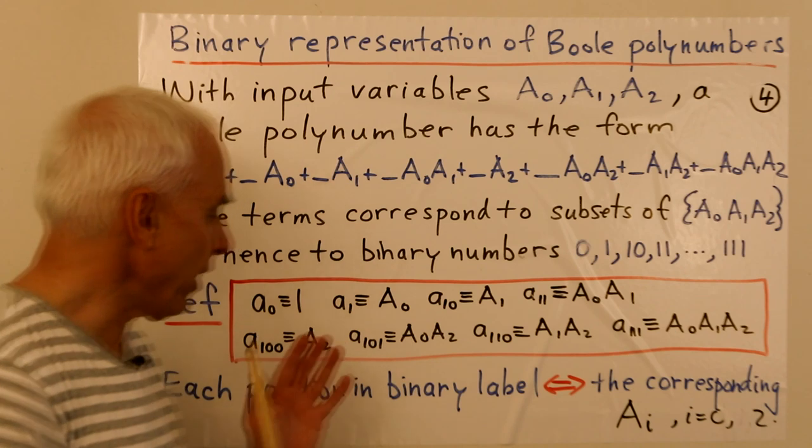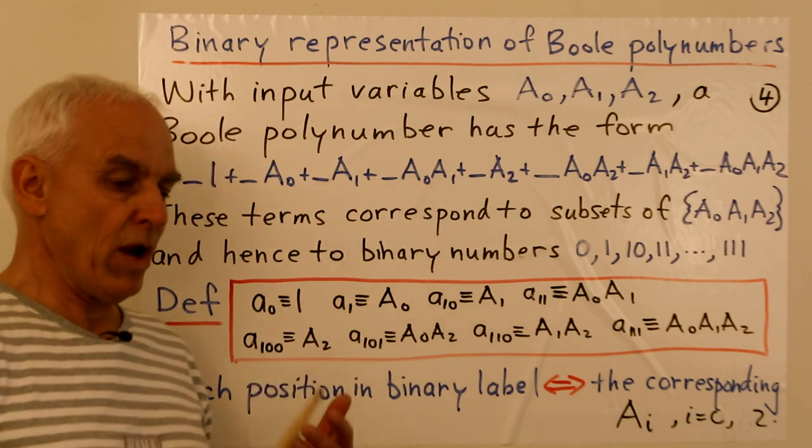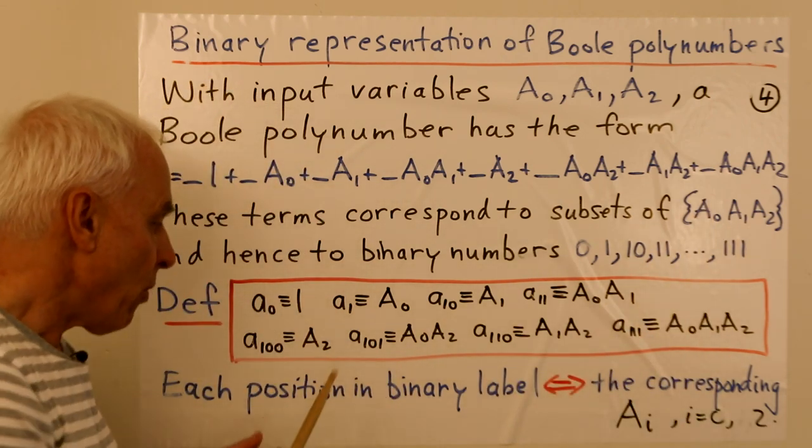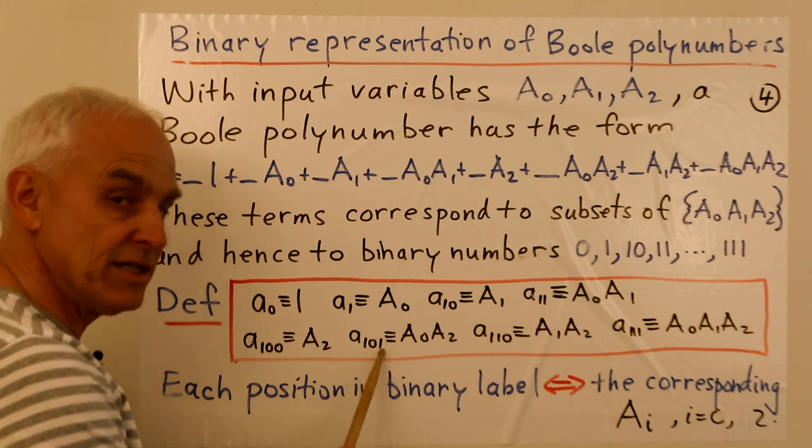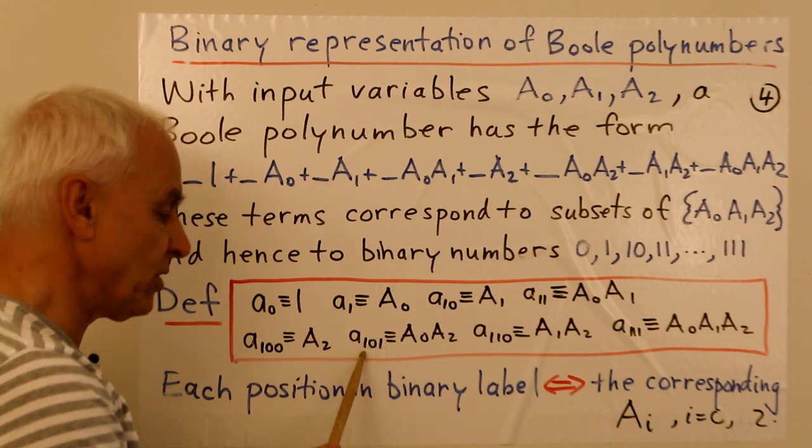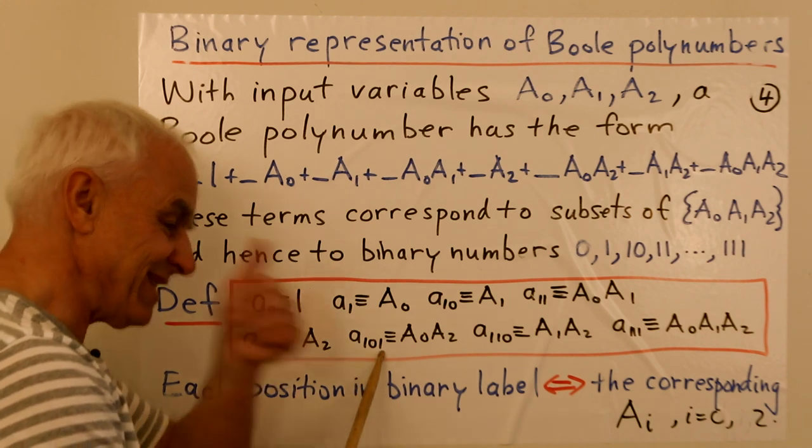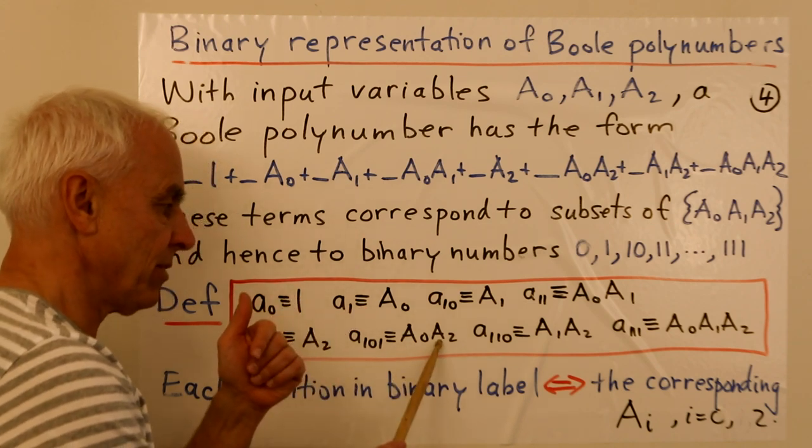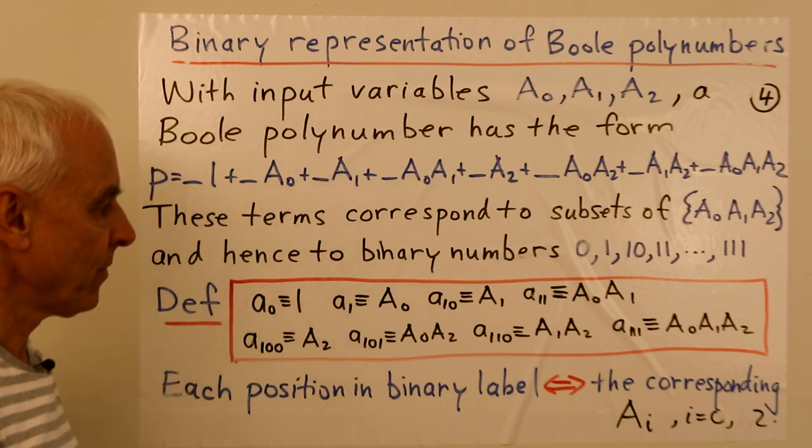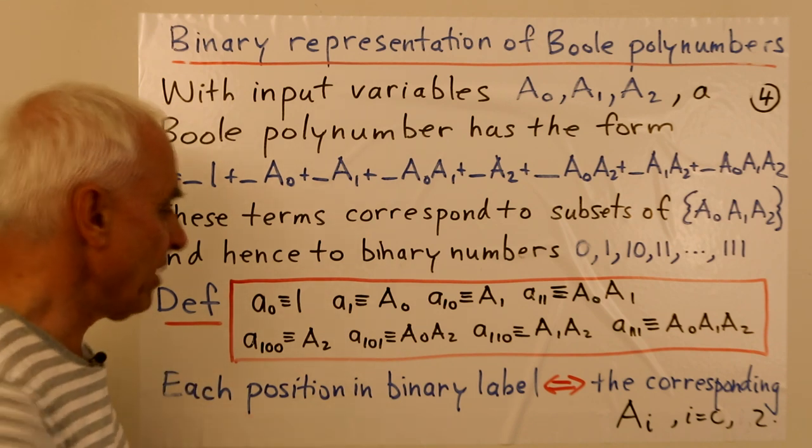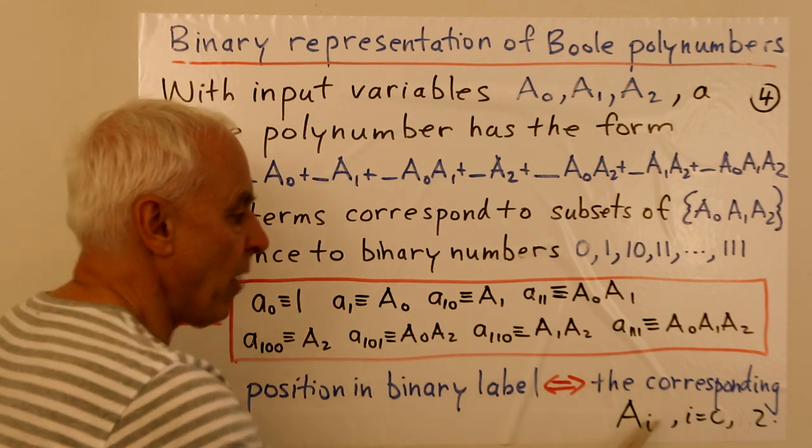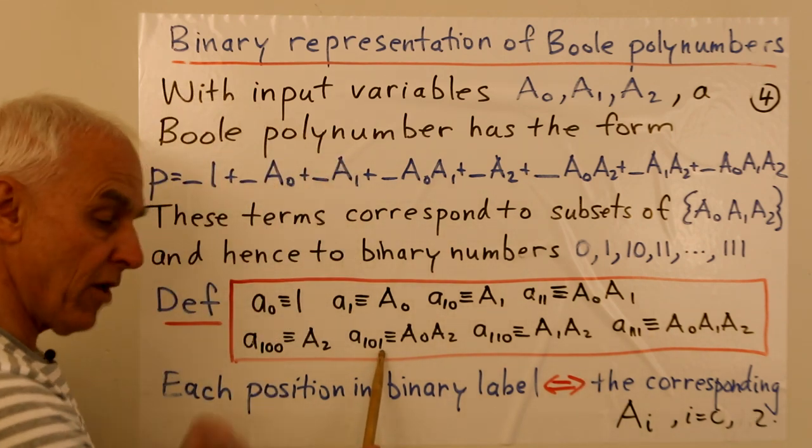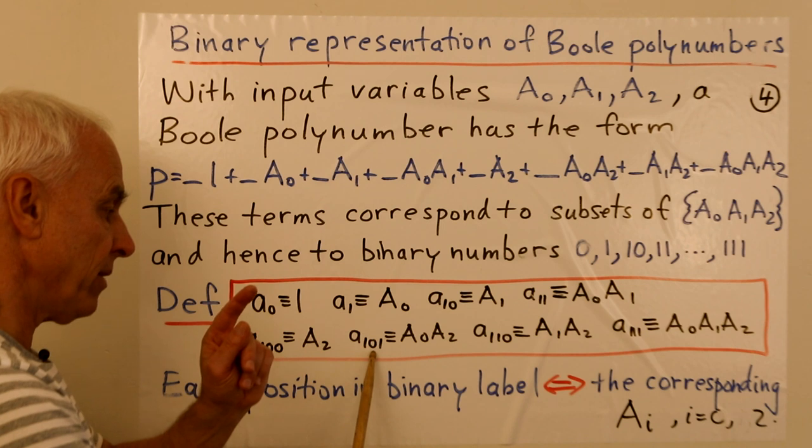So what is the rule here? So suppose we have a101 and we want to know what product of A's does that correspond to? Or what subset of this does it correspond to? Well, we just look at the digits. That's the 2^0 digit. That's the 2^1 digit. That's the 2^2 digit. So we're ticking the 2^0 digit and the 2^2 digit. So that corresponds to A0 A2. So each position in the binary label here corresponds to the corresponding AI from I equals 0 to 1 to 2, where the rightmost corresponds to A0 and then A1 and then A2.